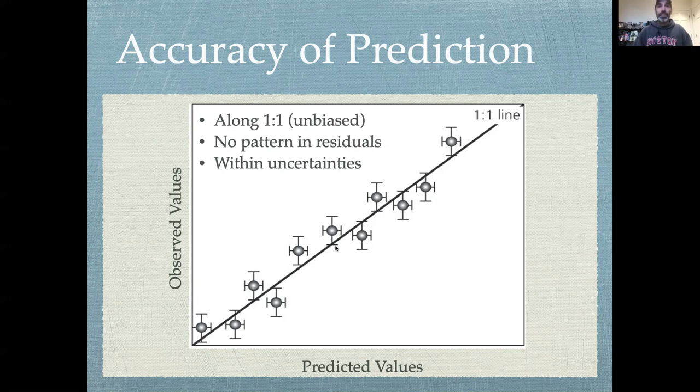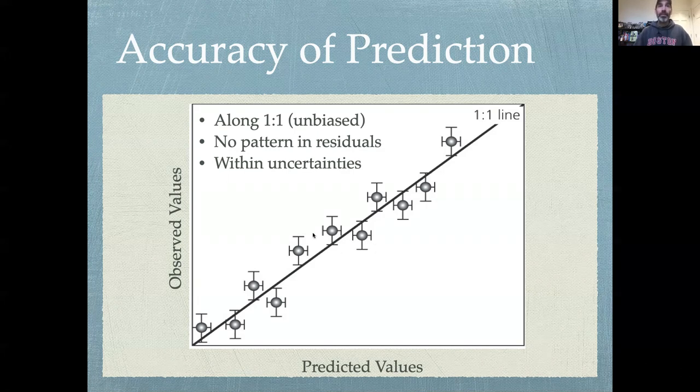And the distance that points fall away from the one-to-one line, because no model is perfect, but they're within the uncertainties of the model and the data. And so in this case we've put the uncertainties in the observations as error bars in the y direction and we've put the uncertainties in the model as error bars in the x direction.